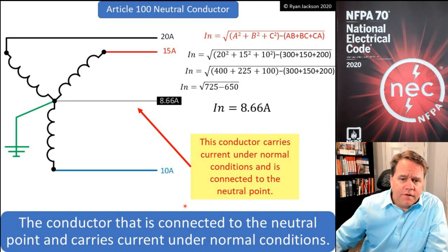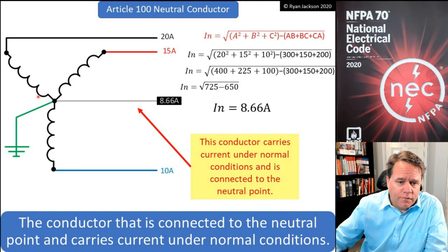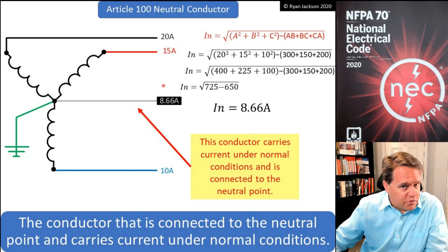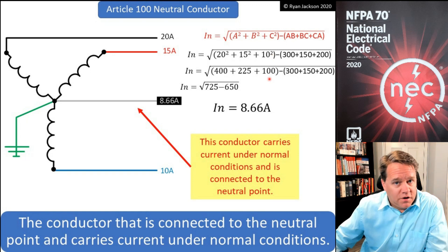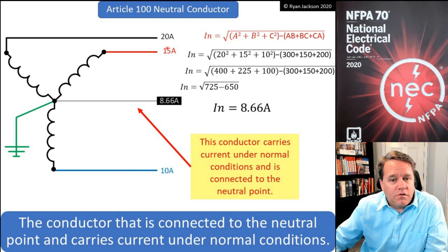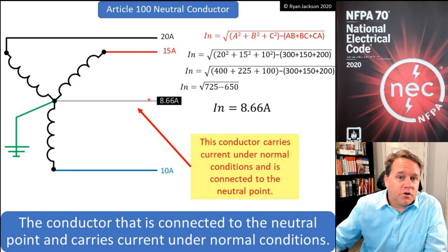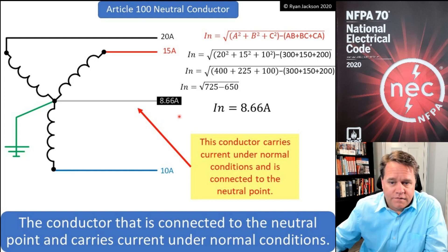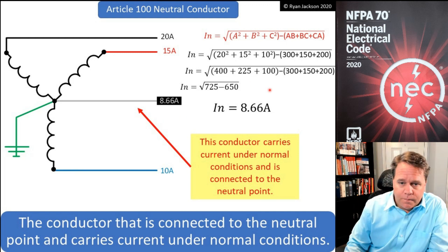On a three-phase four-wire Y connected system, the neutral conductor connects to the neutral point and carries current under normal conditions. For example, with 20 amps on Line 1, 15 amps on Line 2, and 10 amps on Line 3, the neutral current works out to 8.66 amps, which I can calculate using the formula shown here.